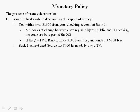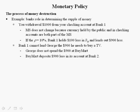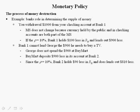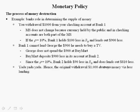Bank 1 cannot lend George the $900 he needs to buy his TV. George does not spend the $900 at BuyMart. BuyMart deposits $900 less into its account at Bank 2. Since the reserve requirement ratio is 10%, Bank 2 holds $90 less than required reserves and does not lend out the $810 to Jill, and so on. Hence, the original withdrawal of $1,000 destroys money via less lending.